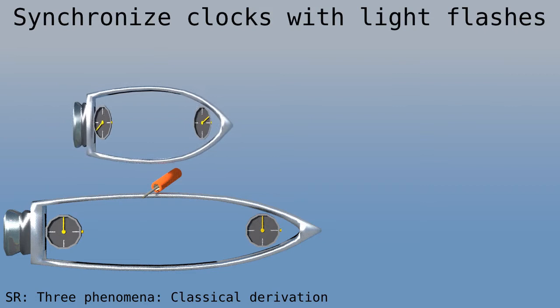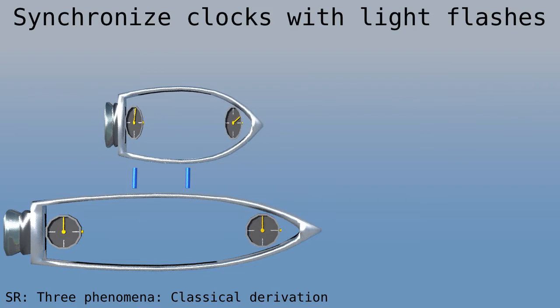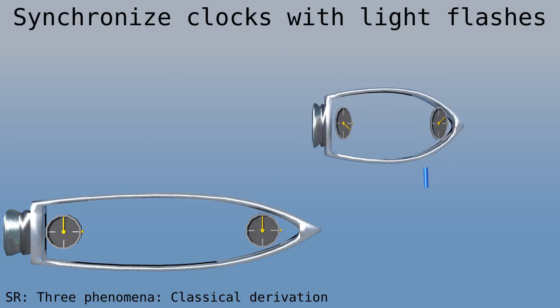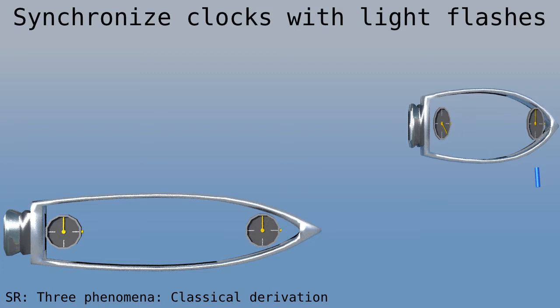Now for the moving ship, we do the same thing. Here, one clock is approaching the firecracker, so it'll get reset first. The other clock is moving away from the firecracker, so it takes a while for the light flash to catch up. When it does, the first clock is already ahead. This is how clocks on a moving spaceship end up not synchronized.